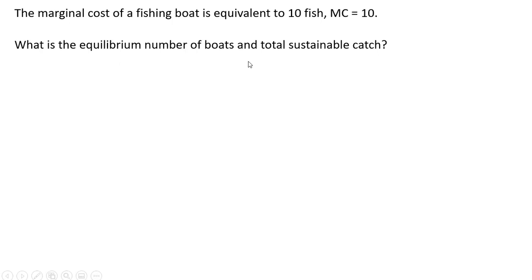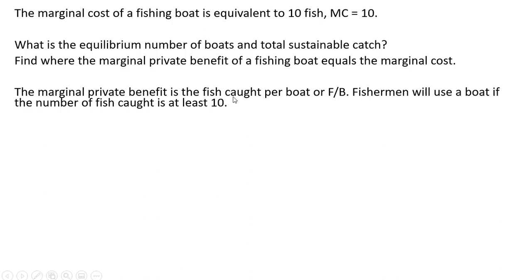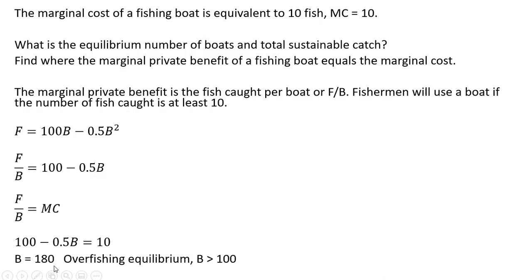What is the equilibrium number of boats and total sustainable catch? We're going to find where the marginal private benefit of a fishing boat equals the marginal cost. The marginal private benefit is the fish caught per boat, or F divided by B. Fishermen will use a boat if the number of fish caught is at least 10, the marginal cost. Dividing our total sustainable fish catch equation by B, we set 100 minus 0.5B equal to the marginal cost and solve for the number of fishing boats, getting 180. This clearly is an overfishing equilibrium — B exceeds 100.